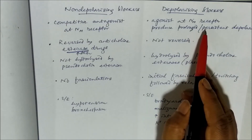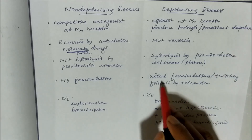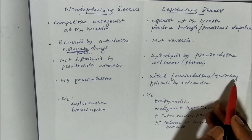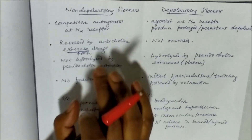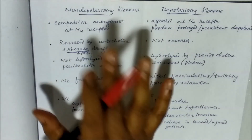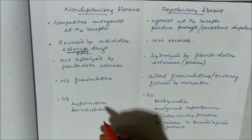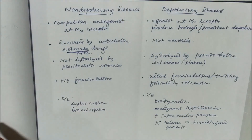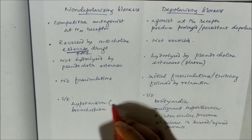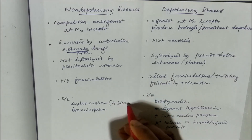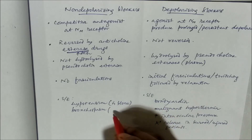Because of initial depolarization followed by depolarization block, there will be initial fasciculations or twitching followed by relaxation with depolarizing blockers. No fasciculations will be seen in the case of non-depolarizing blockers. Two major side effects of non-depolarizing blockers are hypotension — because of ganglion block — and bronchospasm because of histamine release.